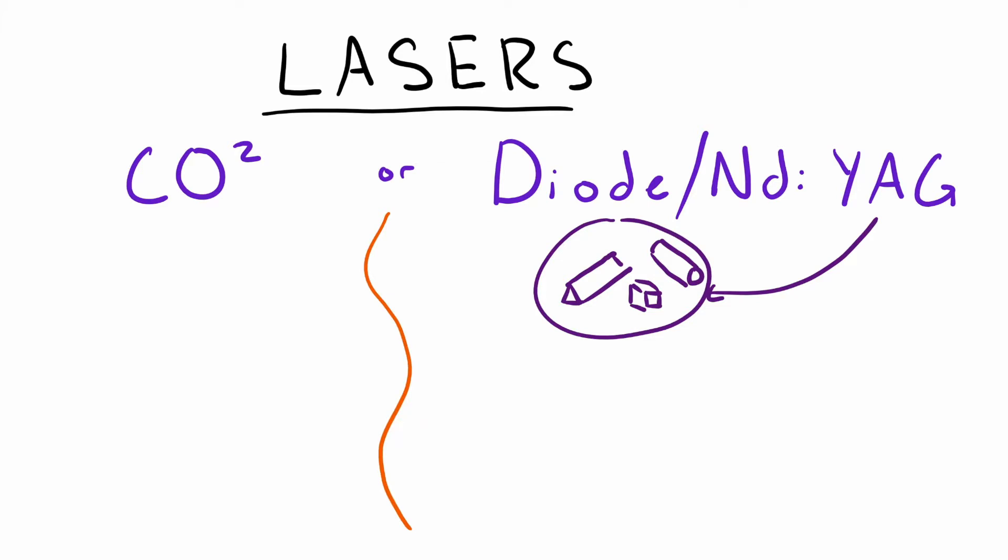CO2 and diode lasers, however very similar in their functionalities, have very sharp contrasts. For one thing, the sizes of their wavelengths differ. Wavelengths are measured between the crests in the sequence of waves.